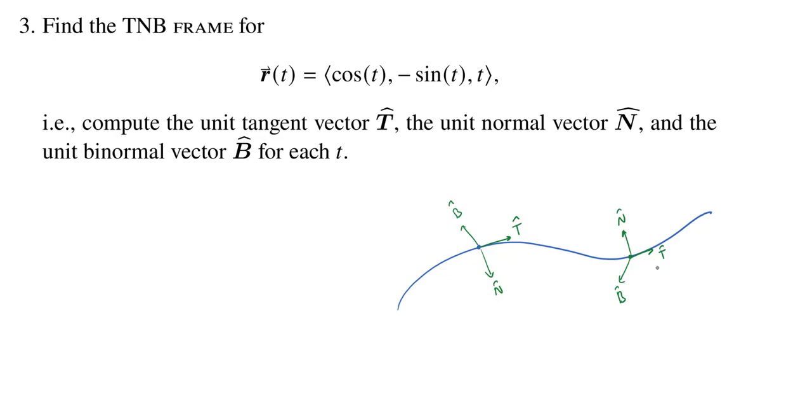And let's see. So how do we actually compute these? So the unit tangent vector you get by taking the derivative of the position vector. And then, of course, we want it to be a unit vector. So we're going to normalize by dividing by the length.